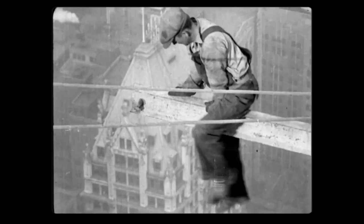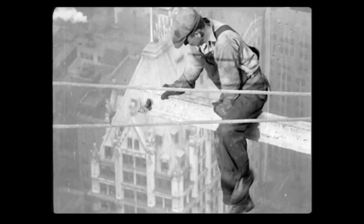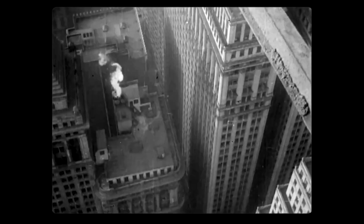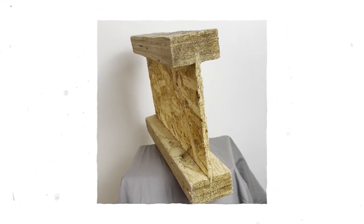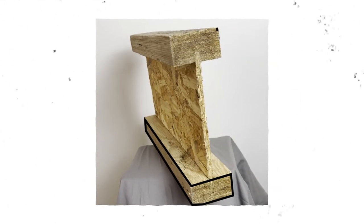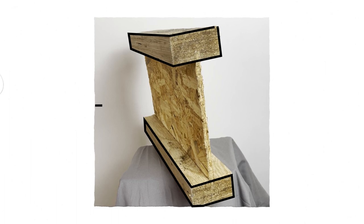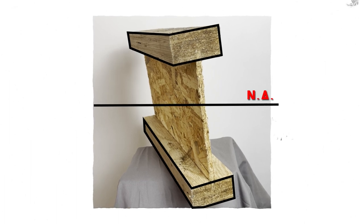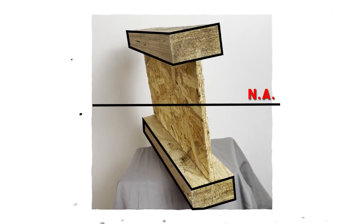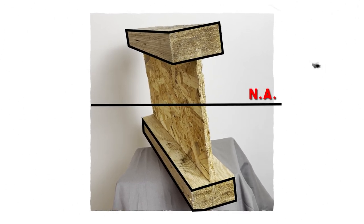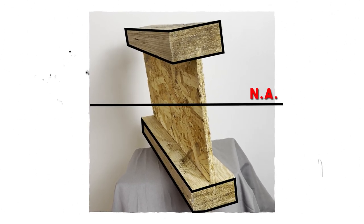This engineering concept isn't new at all — we've been using steel I-shaped beams for nearly 200 years. The reason this shape is highly efficient is because it has most of the material located further away from the neutral axis of the beam.